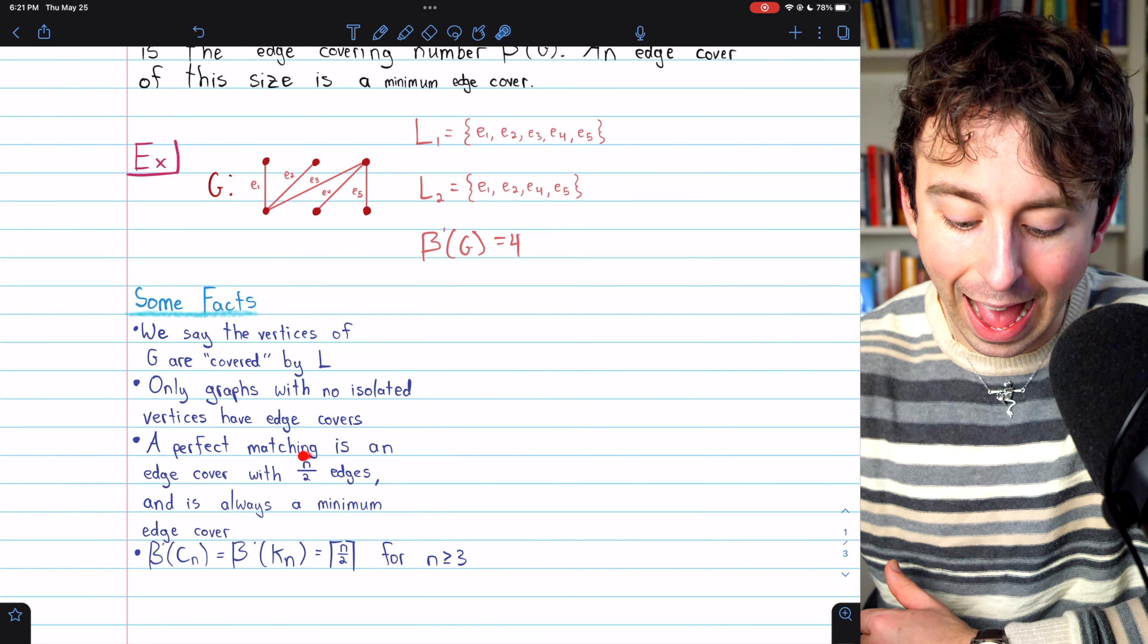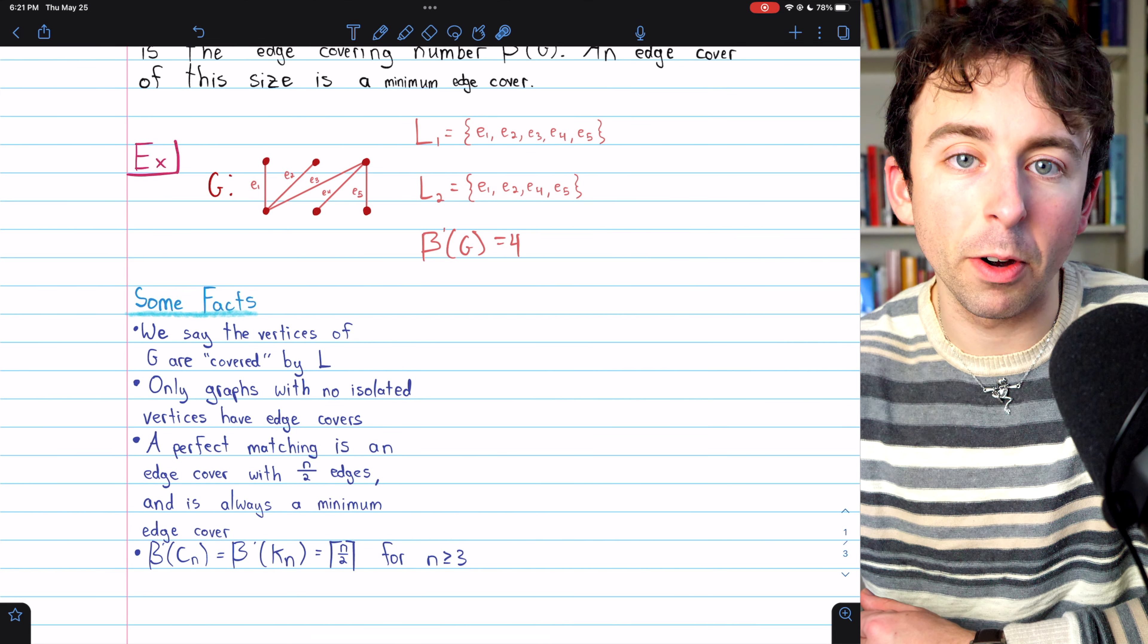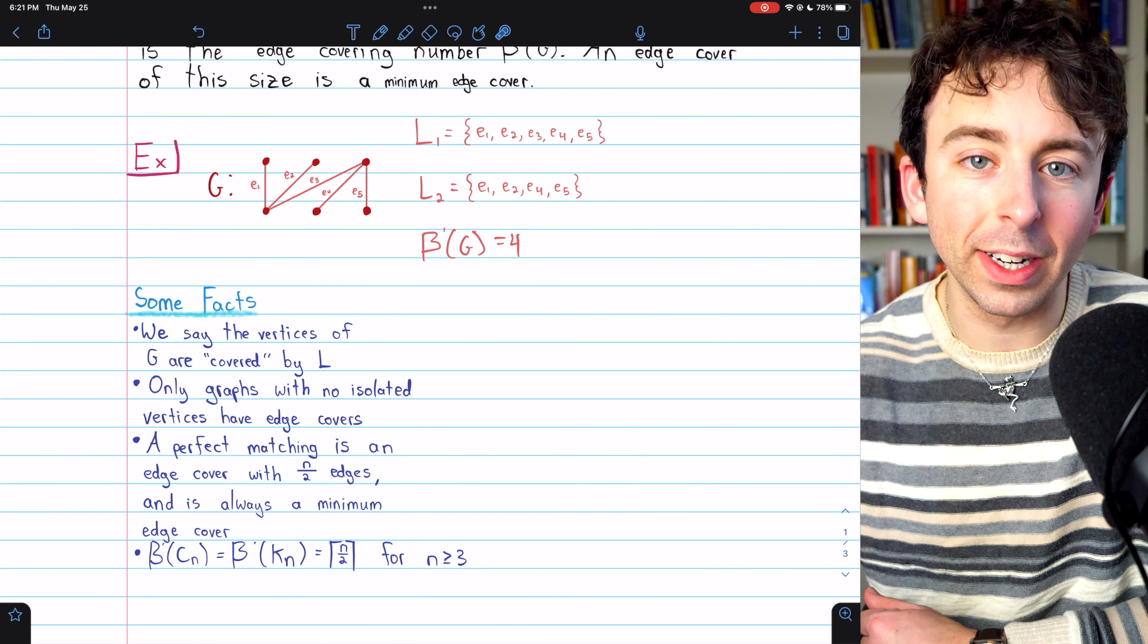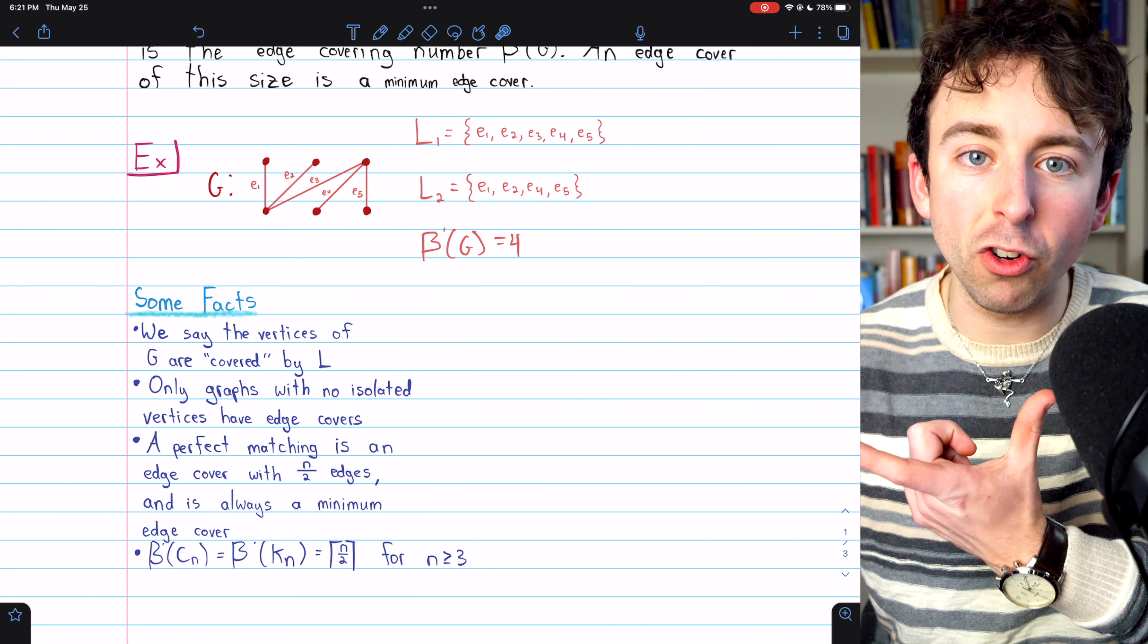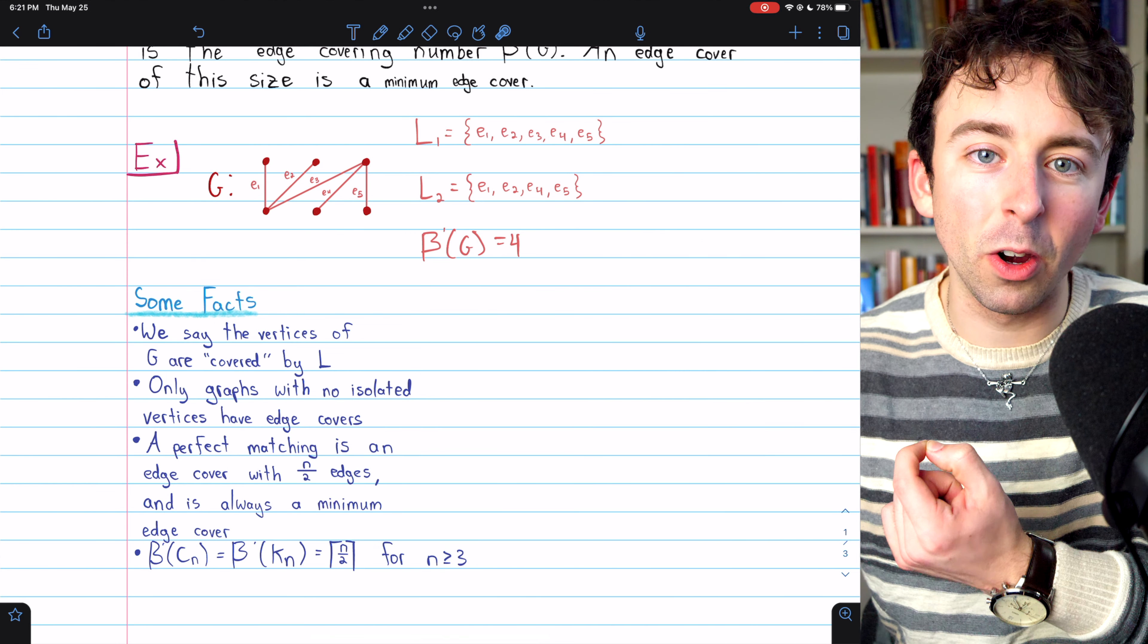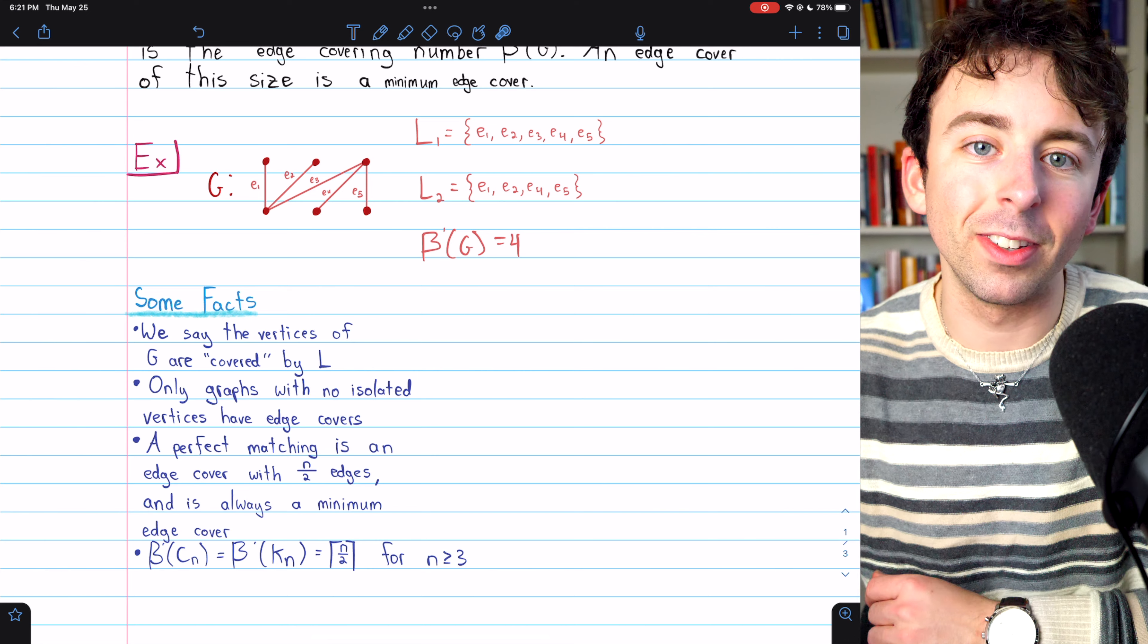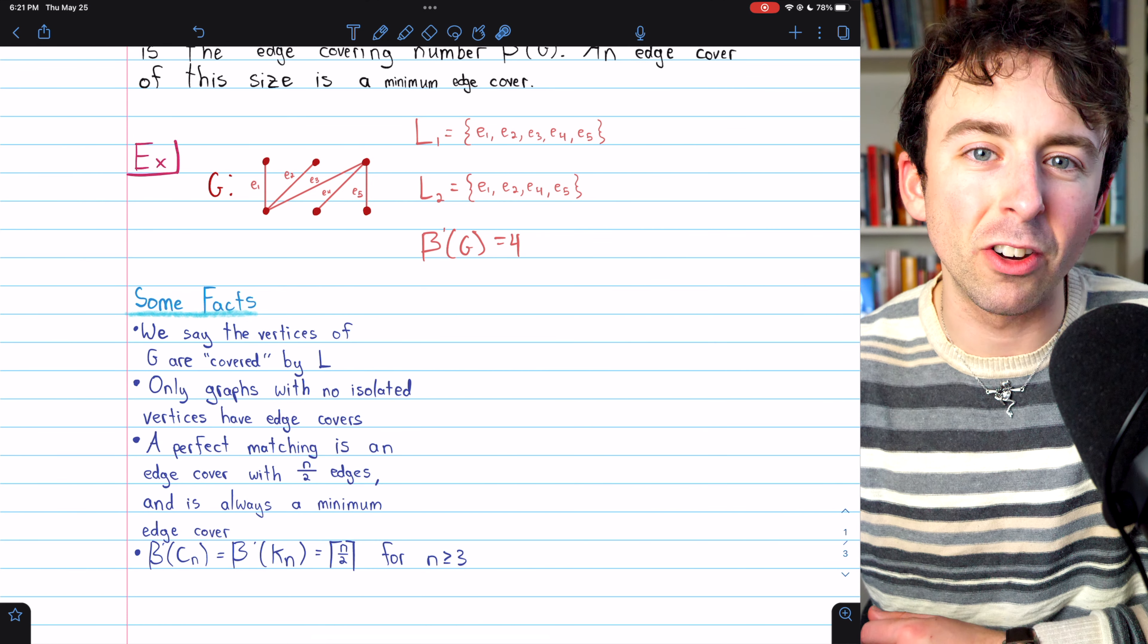Of course, not every graph has such an edge cover. And it's also called a perfect matching because each edge matches two vertices. So you have perfectly matched the vertices in a graph with this sort of edge cover.